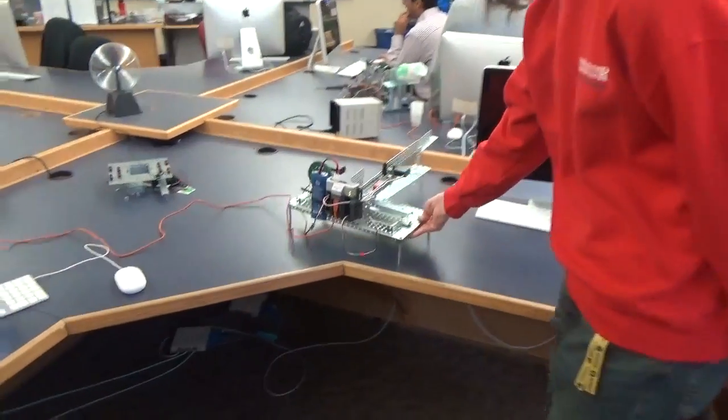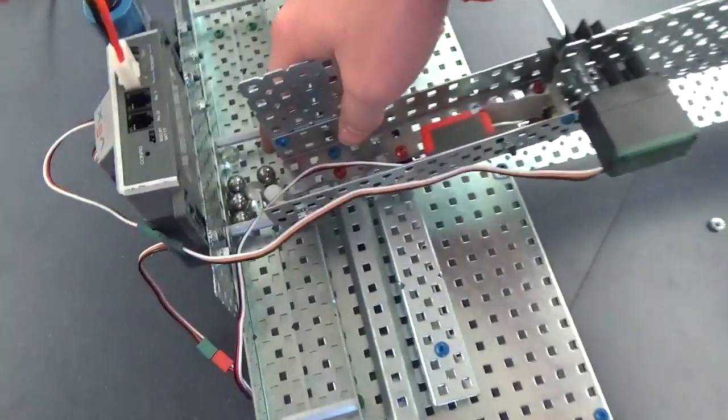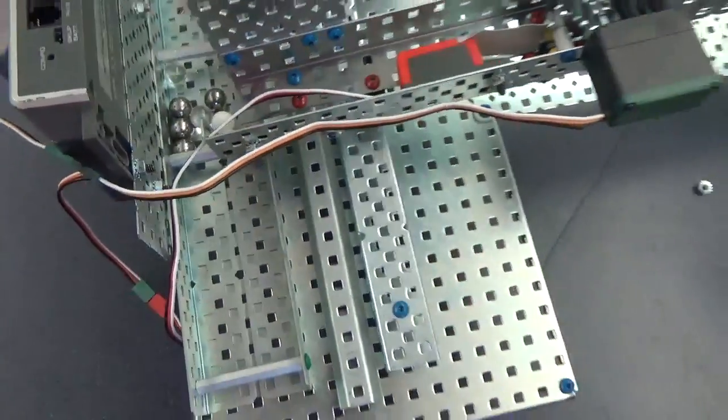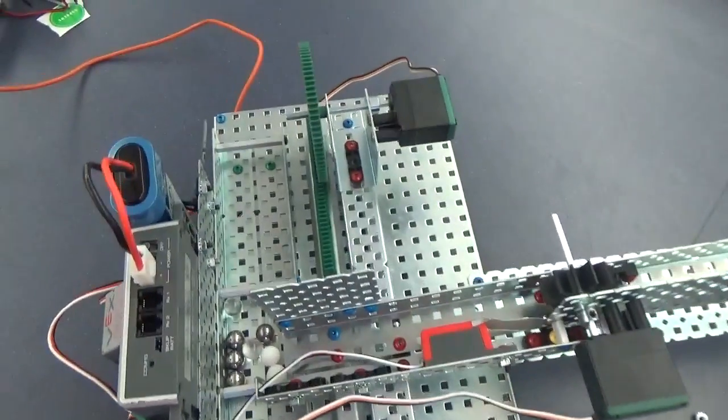The marble sorter is supposed to take three different kinds of marbles: the clear, the metallic, and plastic, and sort them by color or weight. We chose color.